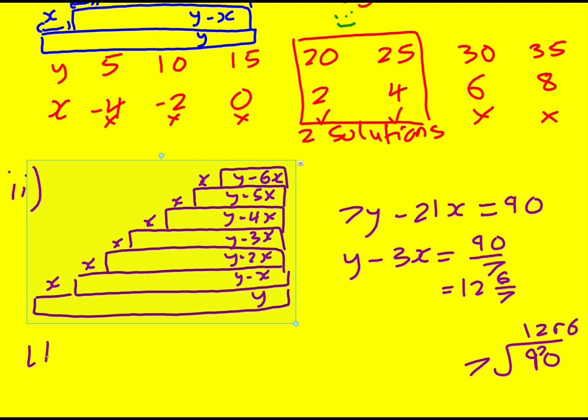So left-hand side is an integer. Right-hand side is not. Therefore, we can't possibly ever get any solutions. That's it. We just have to show that it's not possible.